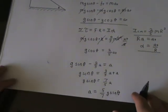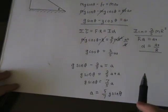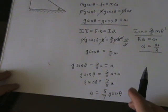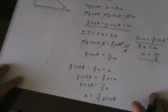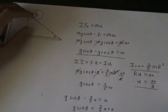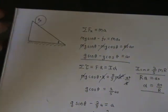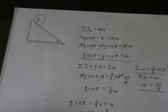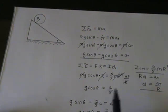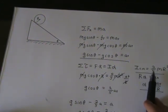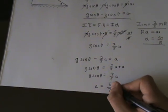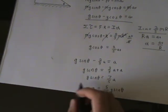This process can be used to solve for any object rolling down an incline. The only difference would be in the moment of inertia. In this case, I assumed this was a sphere, but it could also be a cylinder or any other object that rolls. The difference would be in the moment of inertia, but the process of solving for the acceleration of center of mass would pretty much be the same.